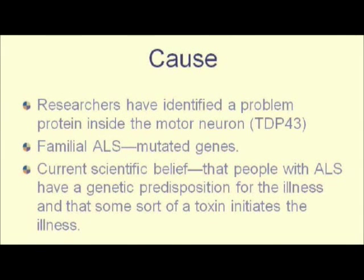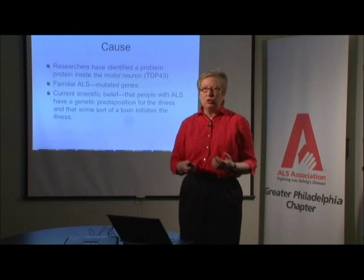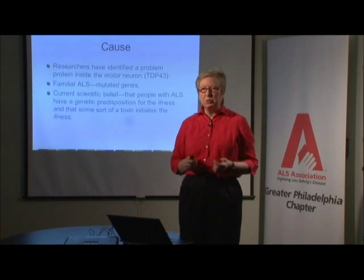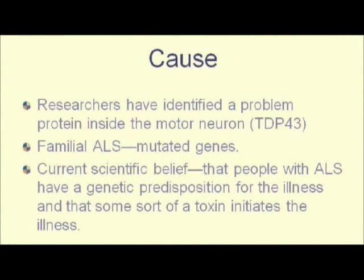As for the cause of ALS, they really don't know what causes it. There's lots of suspicions. They found a protein called the TDP-43 protein — it's like a mass sitting inside the motor neurons that might be plugging up the system, but they don't know if that's the cause. They do know in the familial form, which is the genetic form, a genetic mutation would be the cause. And they suspect there's more of a genetic cause in the sporadic form as well. Researchers now believe there is a genetic connection, and that something triggers the motor neurons to start dying.